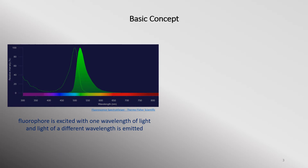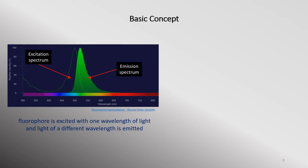Fluorescence involves the absorption of light of one wavelength and emission at another wavelength. Most fluorescent probes or fluorophores don't just absorb and emit light at discrete wavelengths — they usually absorb and emit a range of wavelengths. So when we think about using fluorophores in imaging, it is useful to think about the entire spectrum of their absorption and emission.